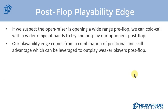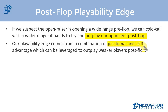The next consideration is our post-flop playability edge, which comes down to our skill advantage over our opponent. If we suspect the open raiser is opening a wide range pre-flop, we can cold call with a wider range of hands to try to outplay them post-flop. When our opponent is a weaker player who opens wide but doesn't play well post-flop, and we have position on them, we can utilize skill and positional advantage to take down pots without going to showdown.